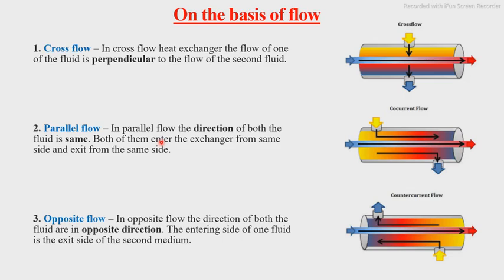In parallel flow, both fluids flow in the same direction. Here fluid one and fluid two are both flowing in the same direction — they are also known as concurrent flow. The third type is opposite flow, in which both fluids run in opposite directions: one fluid moves from left to right and the other from right to left. It is also known as counter current flow.